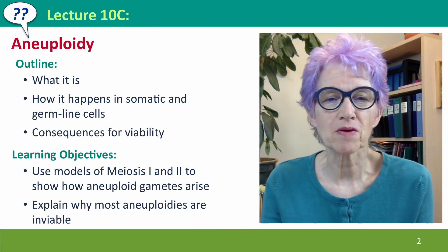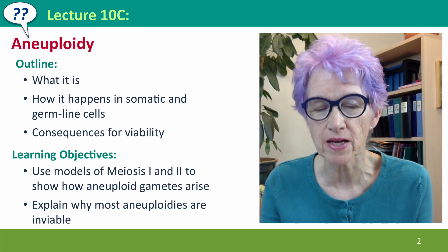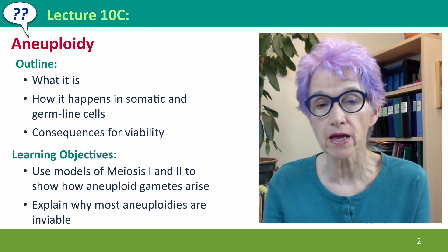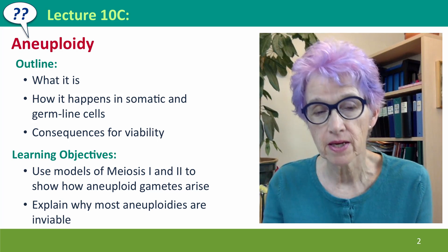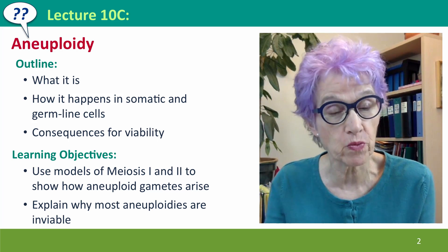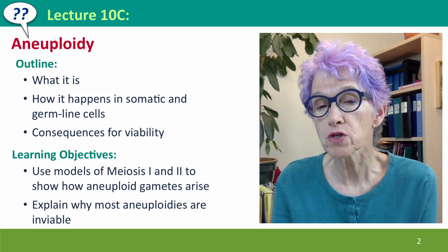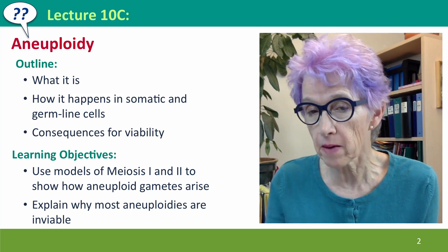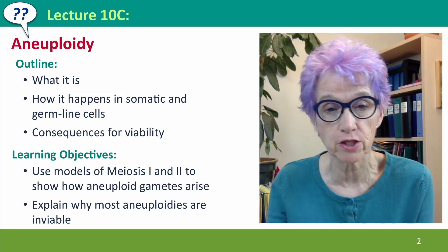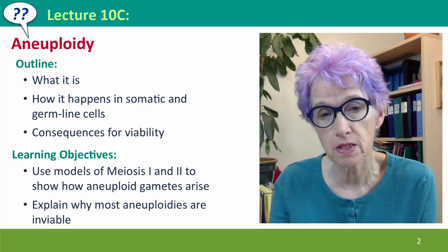Hi, everyone. Welcome to Lecture 10c of Useful Genetics, where we're going to be talking about aneuploidy — again, a version of ploidy. We'll explain what it is and talk about how it happens in both somatic cells and in germline cells, and the consequences.